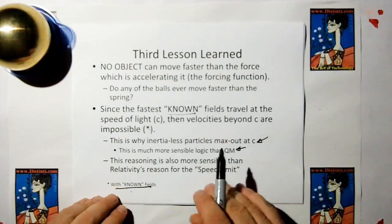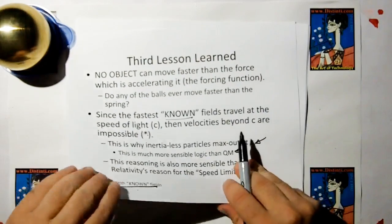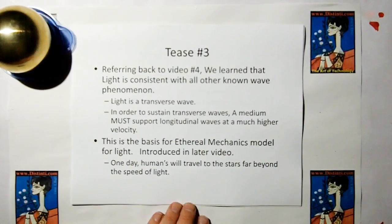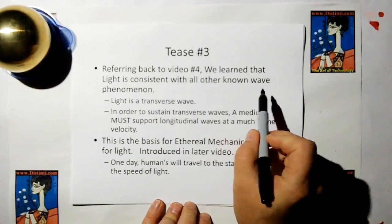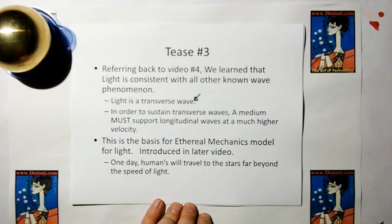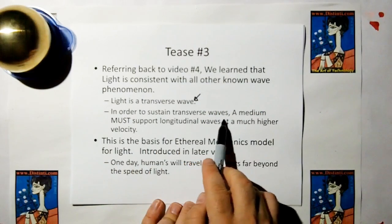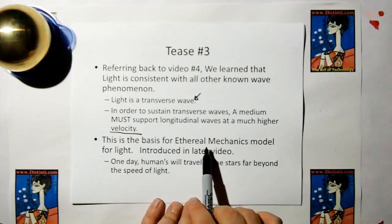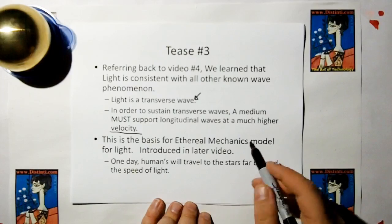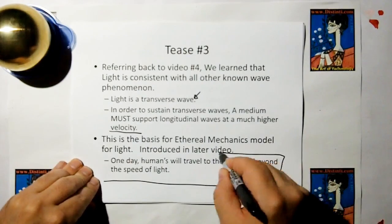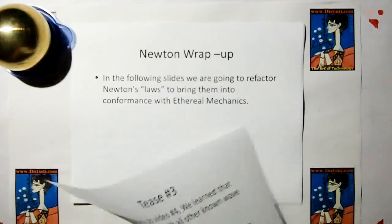This is also a much more sensible reasoning than Einstein's reason for the speed limit. Teaser number three: if we go back to video number four, we learned that light is consistent with all other known wave phenomena — light is a transverse wave. But in order to sustain transverse waves, a medium must support longitudinal waves at a much higher velocity. This is the basis for the Ethereal Mechanics model for light. One day, humans will travel to the stars far beyond the speed of light.